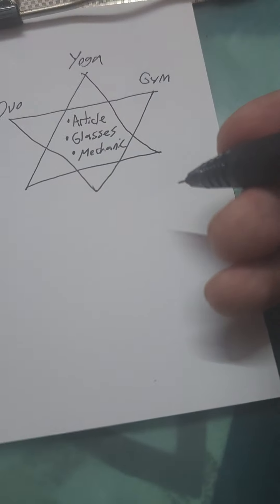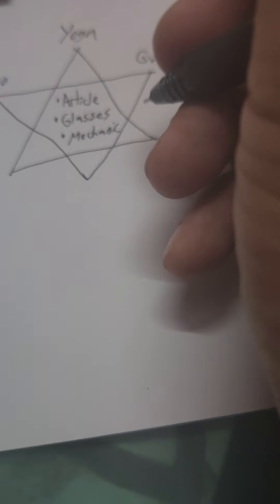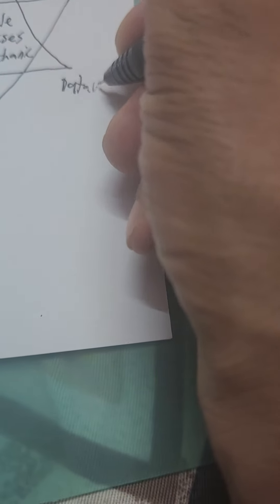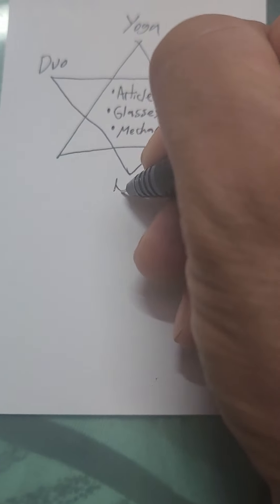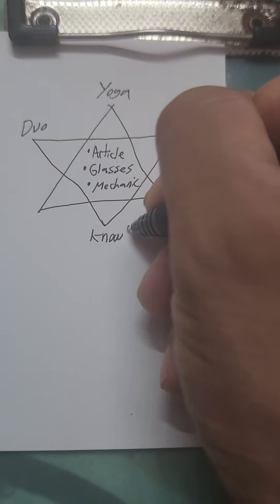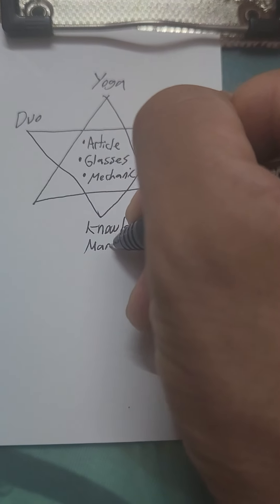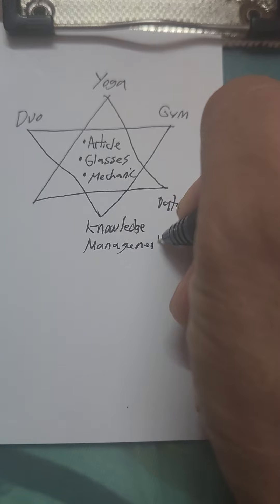The bottom three are three things you need to research. So I'm going to say data view, knowledge management, and task management.